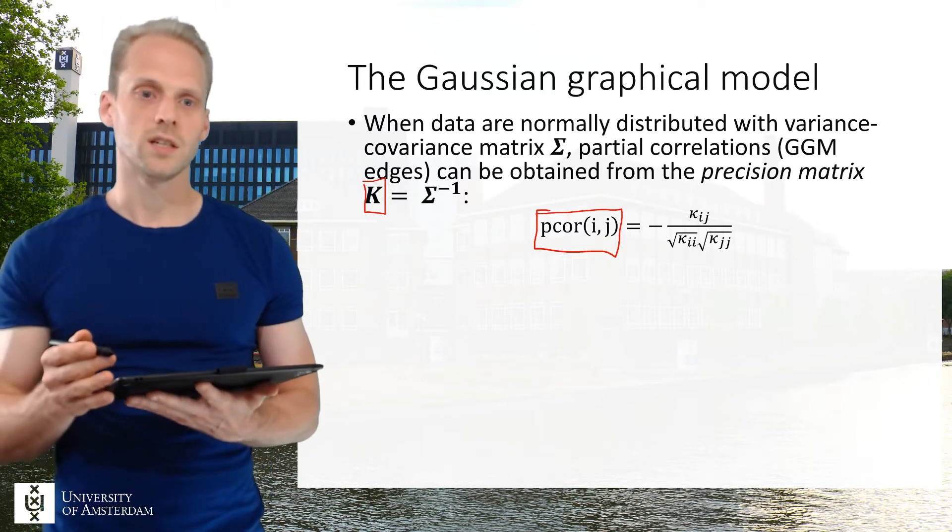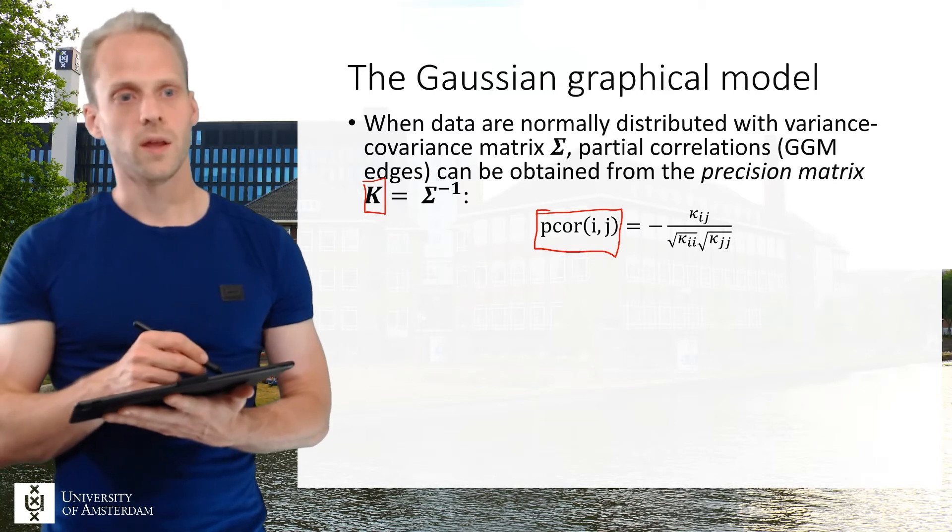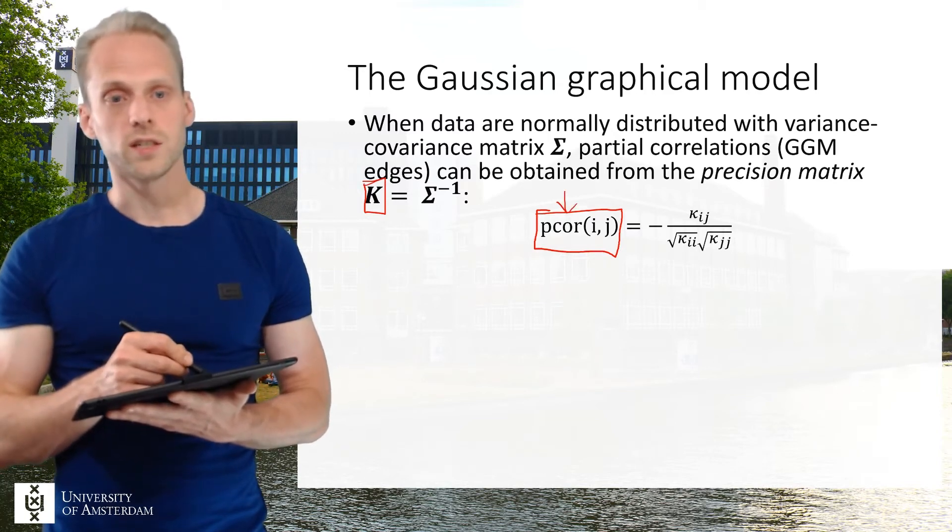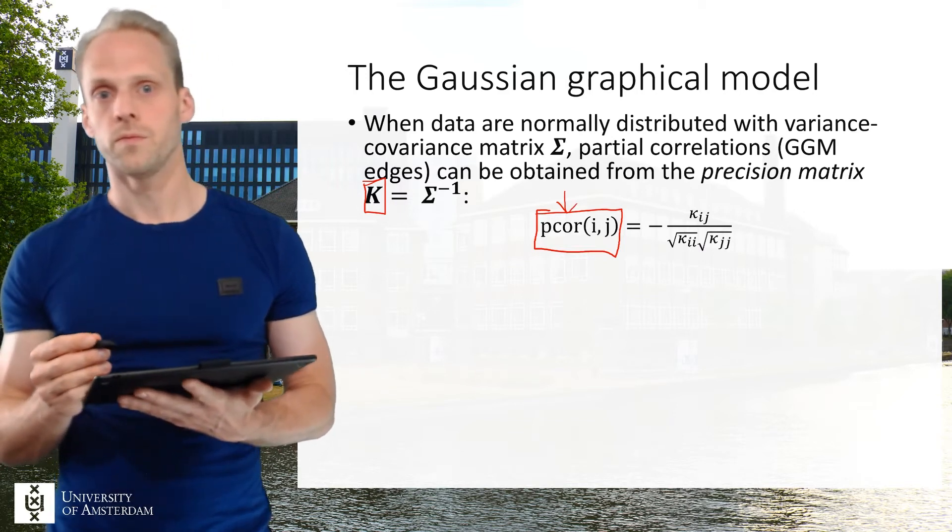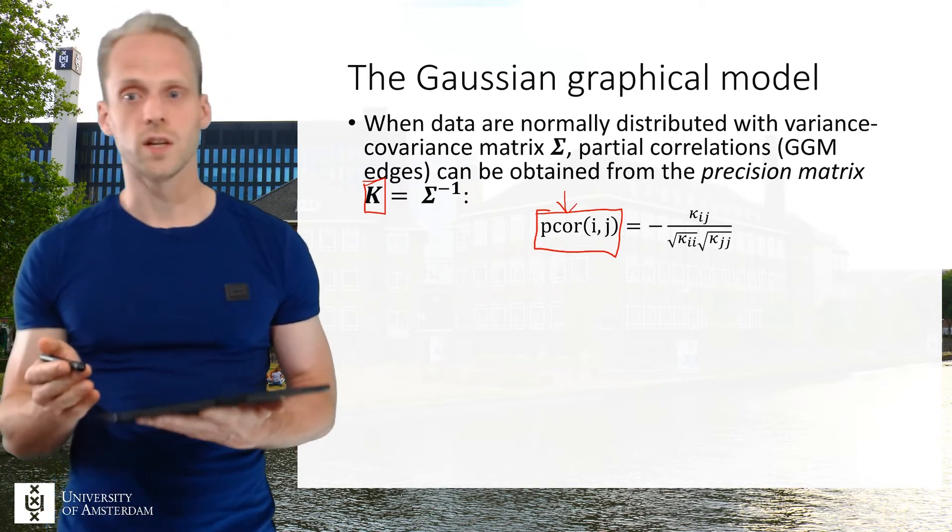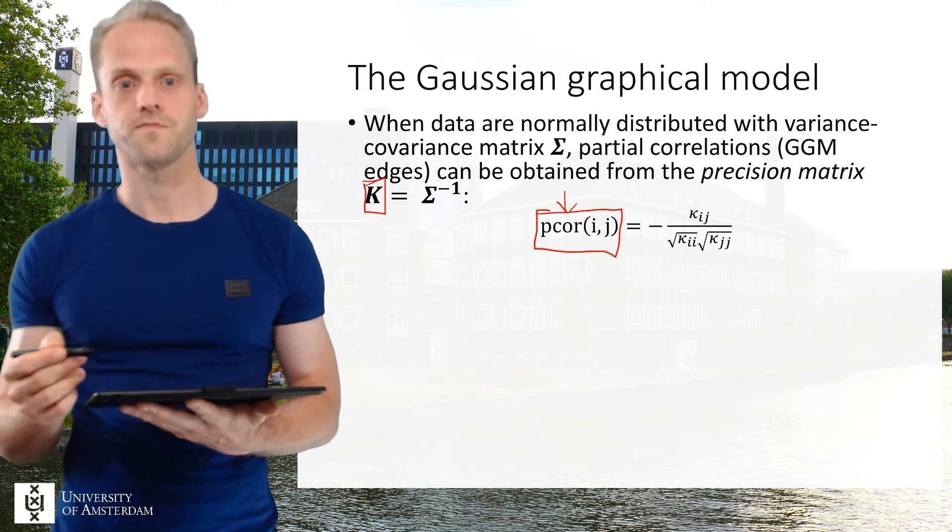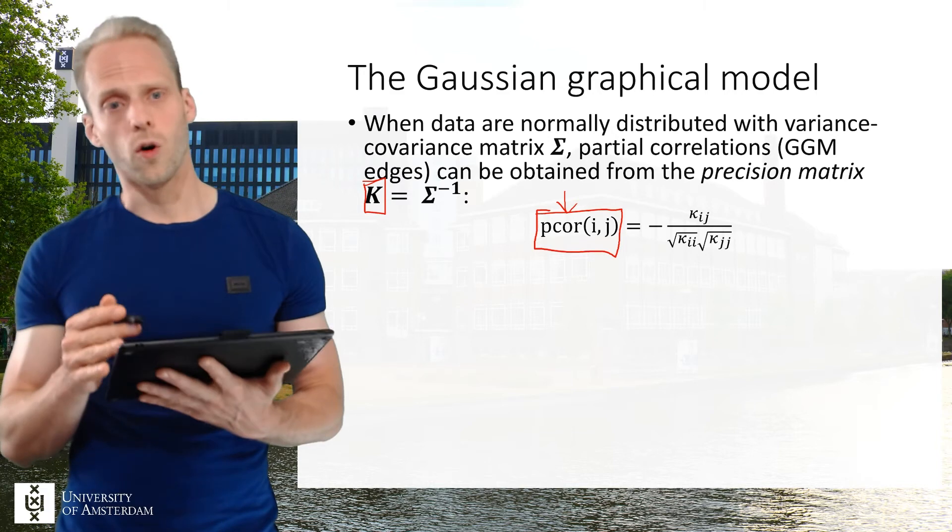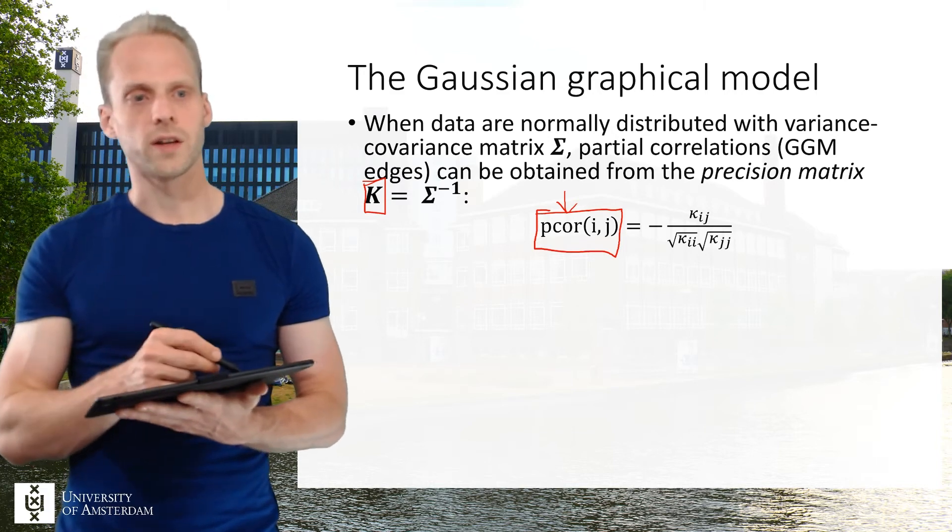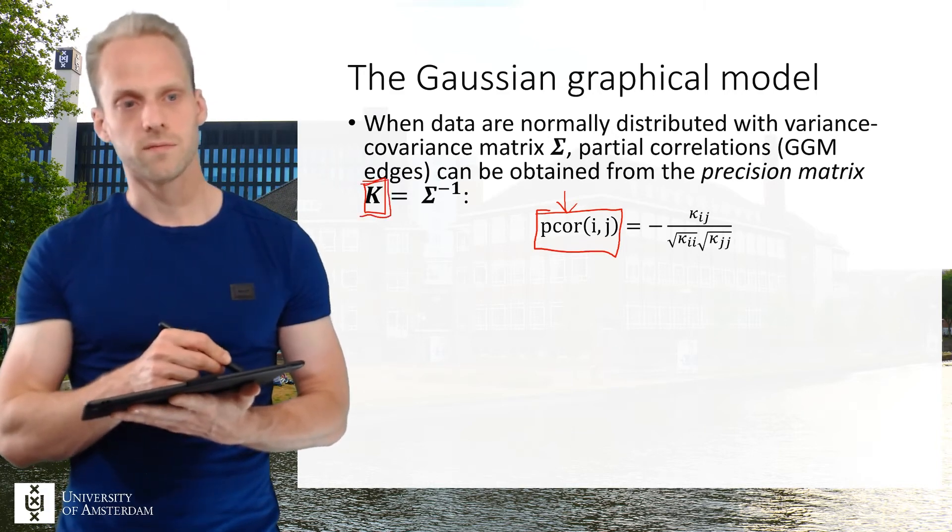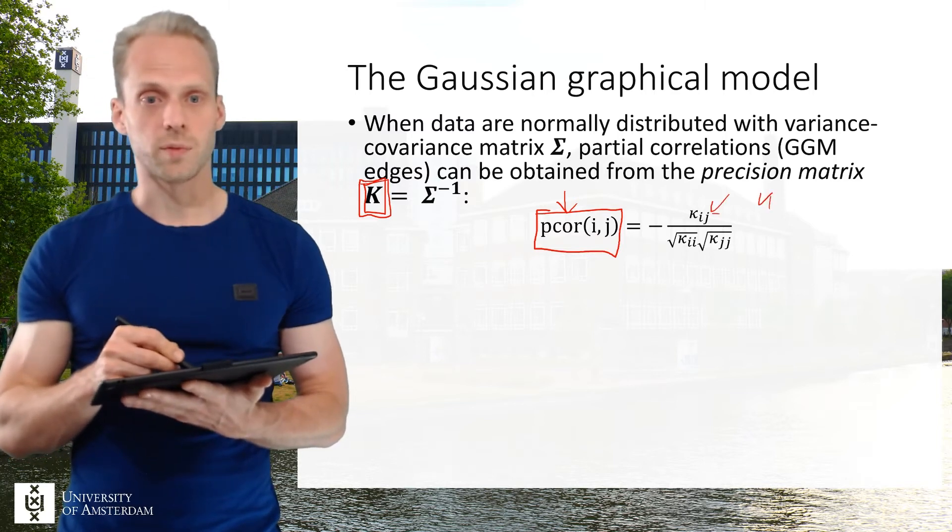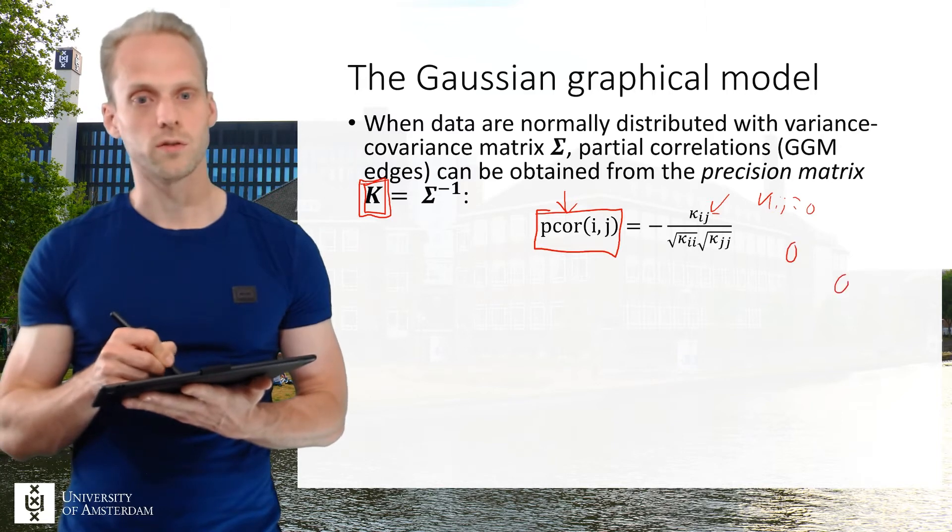So that means that we only need to get this kappa to obtain these partial correlation coefficients that we put in the model. So these partial correlations we then put as edge weights. And that's a very powerful thing and many estimation procedures are built on this particular property where we try to estimate this kappa matrix which encodes the partial correlations, and particularly if kappa ij equals zero then there is no edge between two nodes in the network.